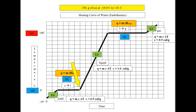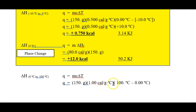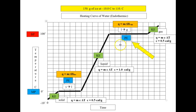The third calculation is the liquid phase, where temperature increases from zero to 100°C. Using q = mcΔT: mass is 150 g, specific heat of liquid water is 1 cal/g·°C, and ΔT = 100 − 0 = 100°C. The heat required to raise liquid water from zero to 100 degrees is 15,000 calories, or 15 kilocalories. Converting to joules gives 62.7 kilojoules.